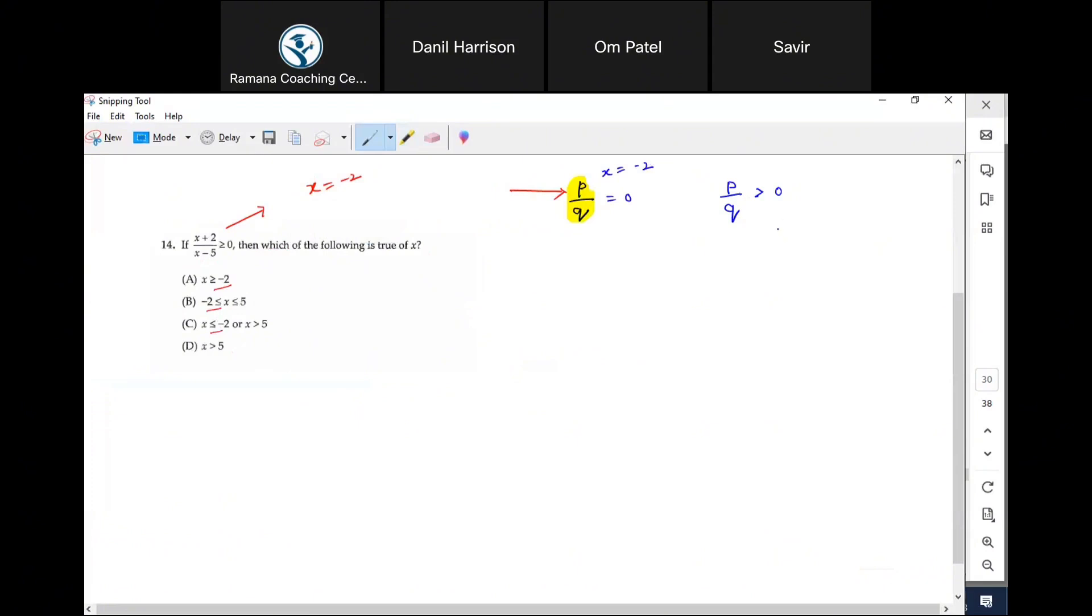When would the fraction be greater than zero? When both are negative or both are positive, correct. Only then the fraction becomes positive.